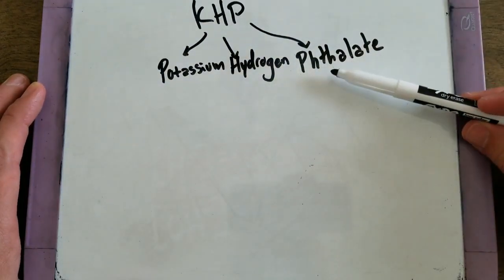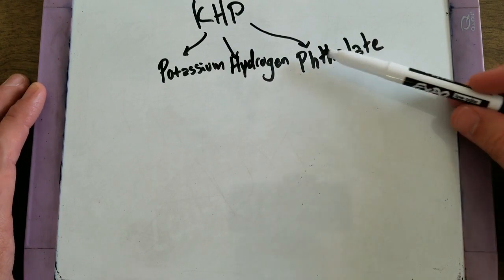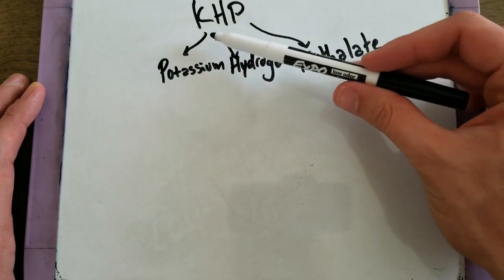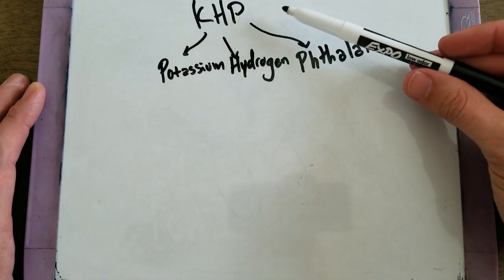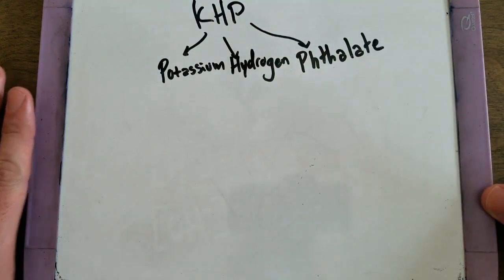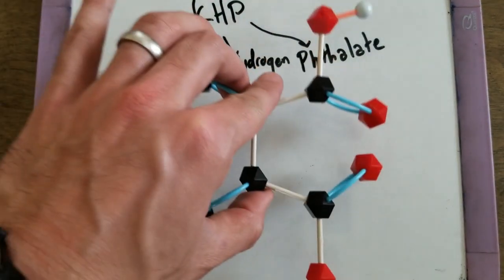Now phthalate is something that's much more complicated than phosphorus, so KHP is not just three atoms, but it has a structure like this.